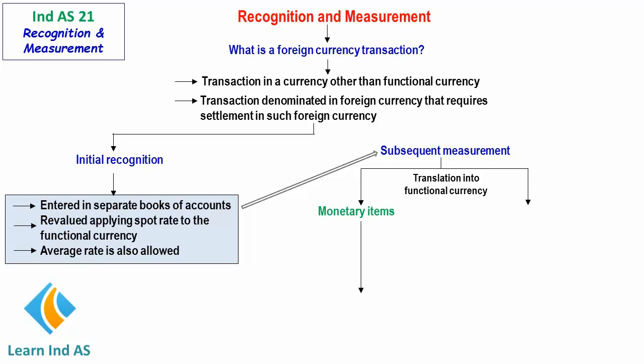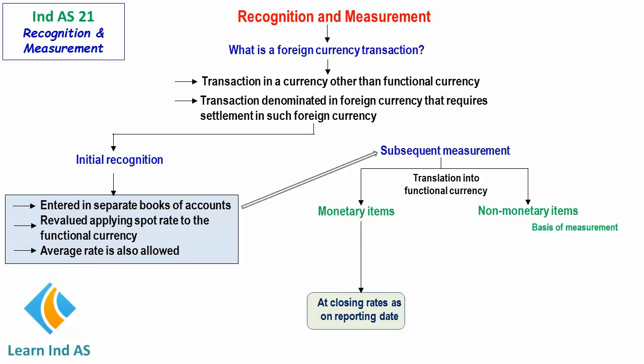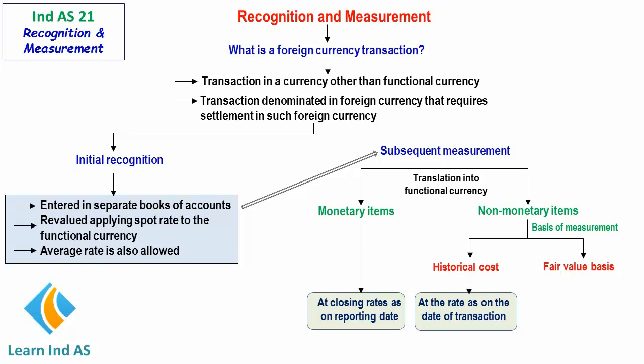Monetary items are translated to the functional currency using the closing rate as on the reporting date. For non-monetary items, the exchange rate to be used depends on the basis of measurement. If the basis is historical cost, then the account balance should be translated at the rate as on the date of transaction.